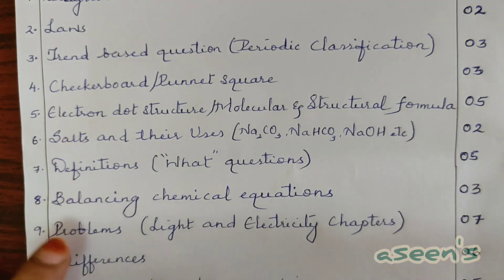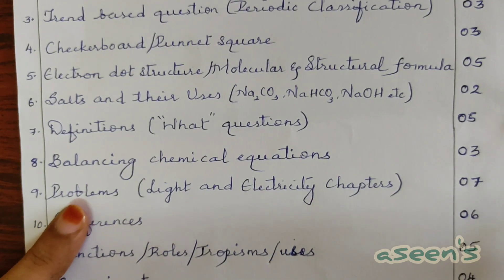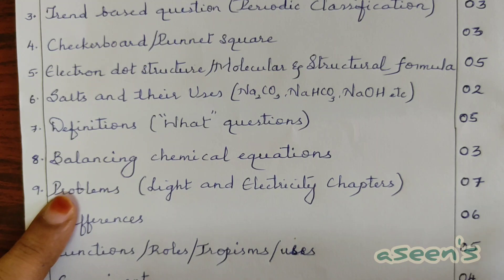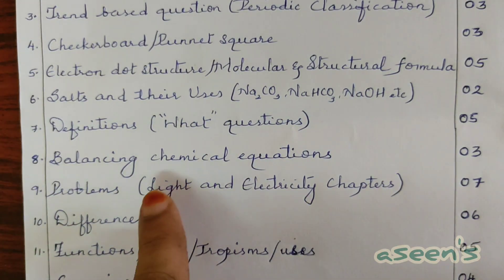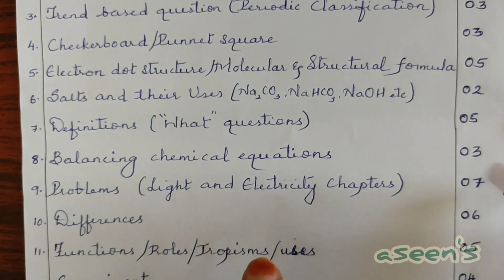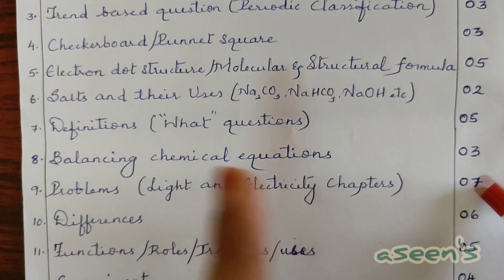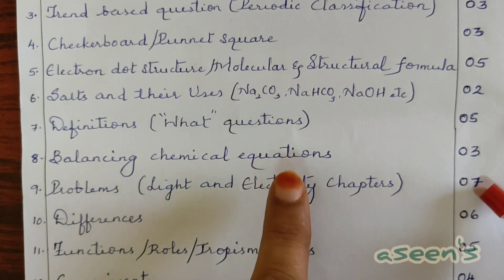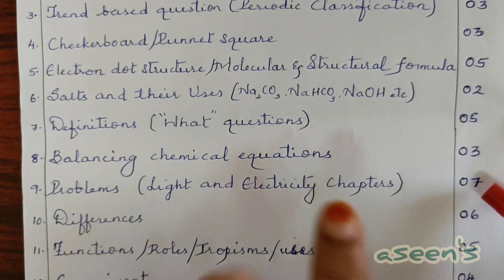Next, problems - the numerical problems. We have got problems only under two chapters, that is light and electricity. All together seven marks are going to be allotted. It could be three marks here and four marks here, or four marks here and three marks here.